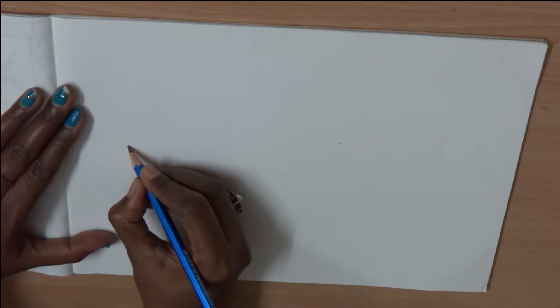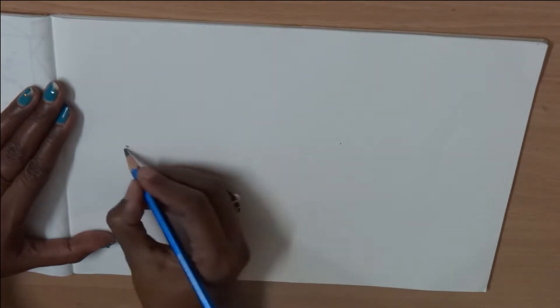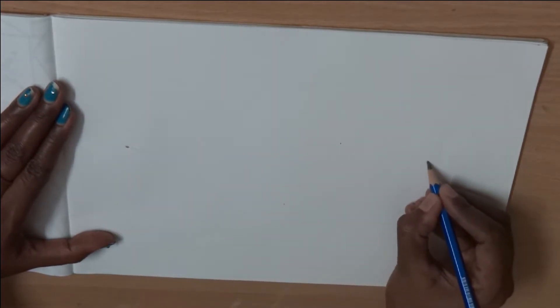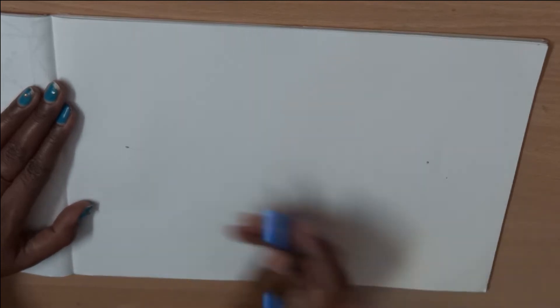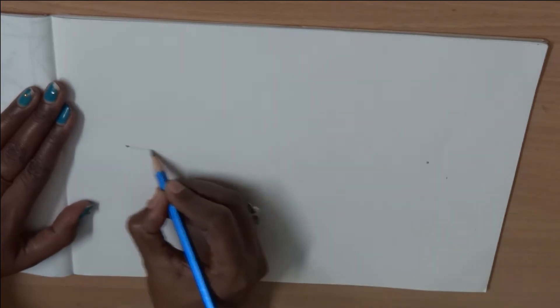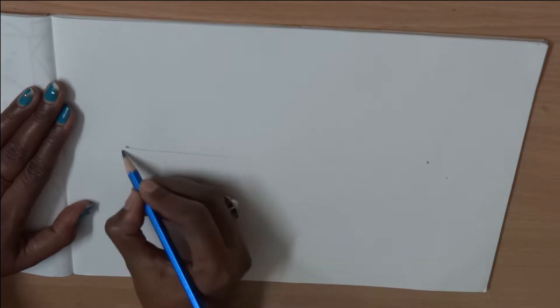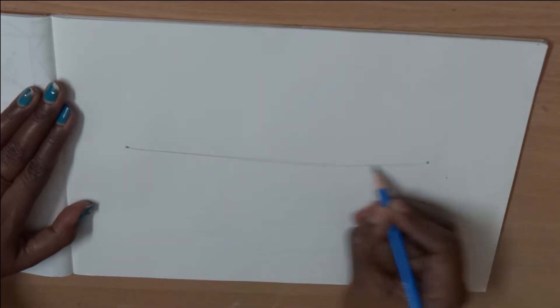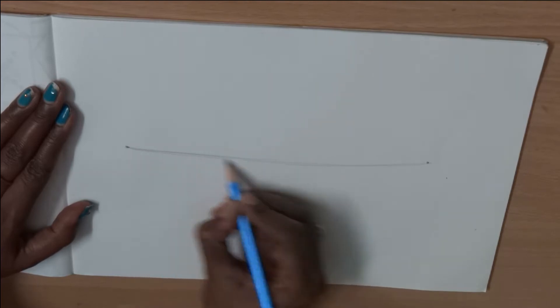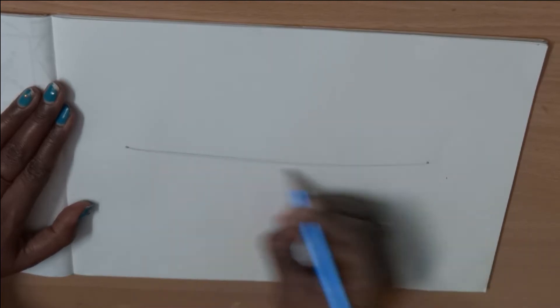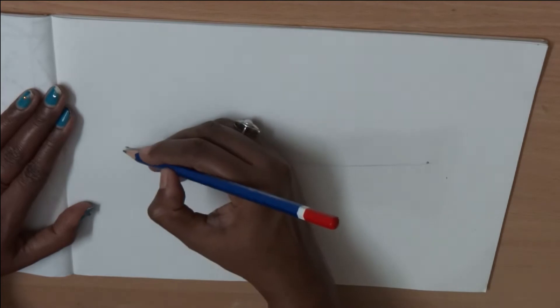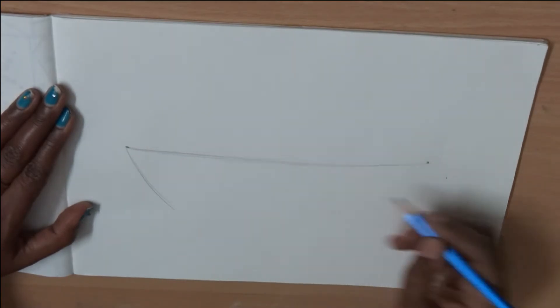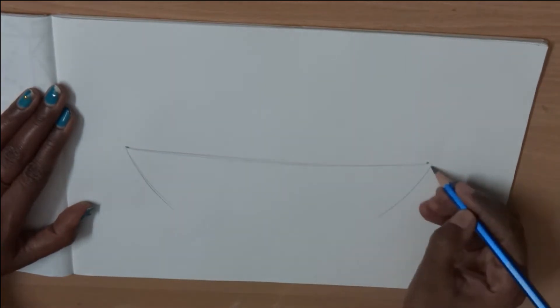Keep your drawing copies in the landscape position. Make two dots like how I am showing. Draw a curved line to join the dots. The line is not straight but it is curved a little bit. Now from the first dot, draw another curved line which will be the sides of the boat.